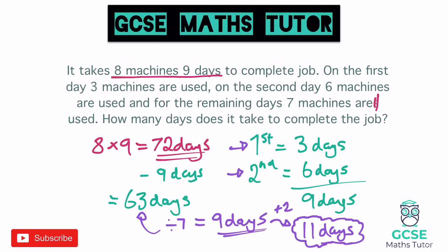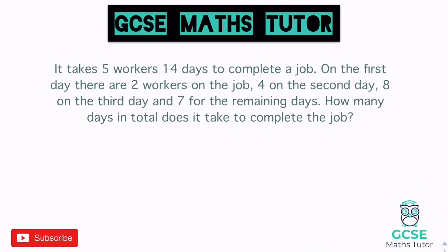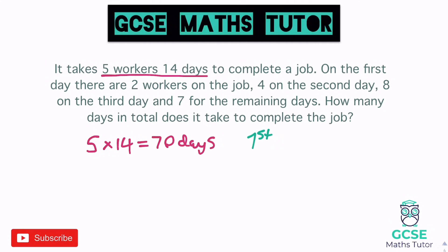One more complex example: it takes five workers 14 days to complete a job. On the first day there are two workers, four on the second day, eight on the third day, and seven for the remaining days. How many days in total does it take? Five times 14 is 70 days for one worker. On day one there are two workers — that's two days' worth of work.